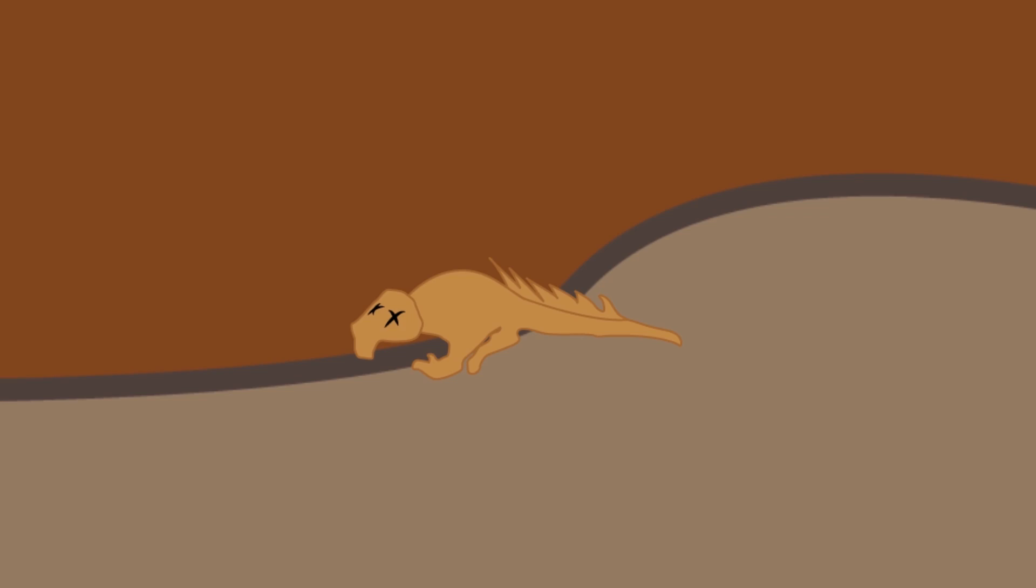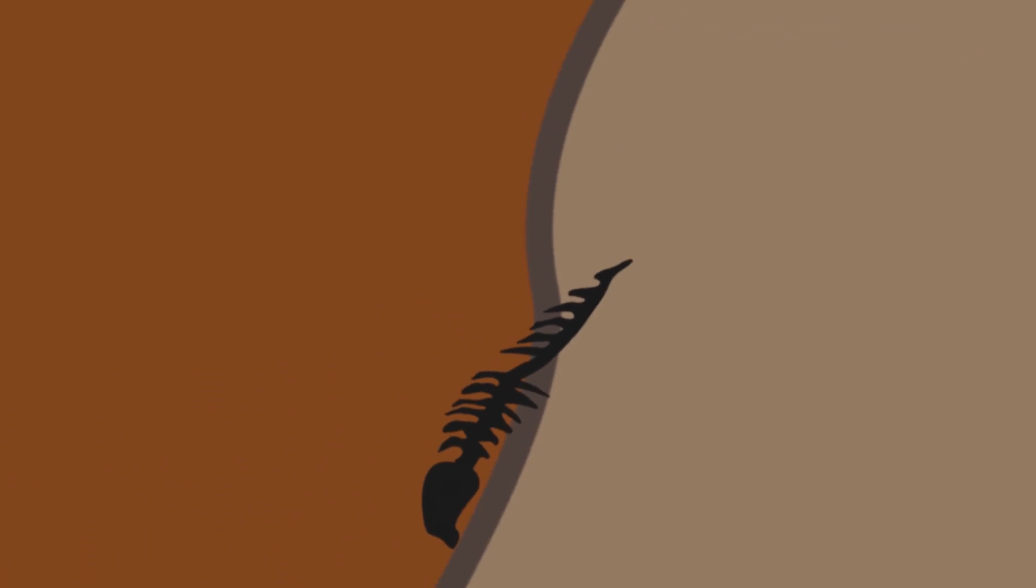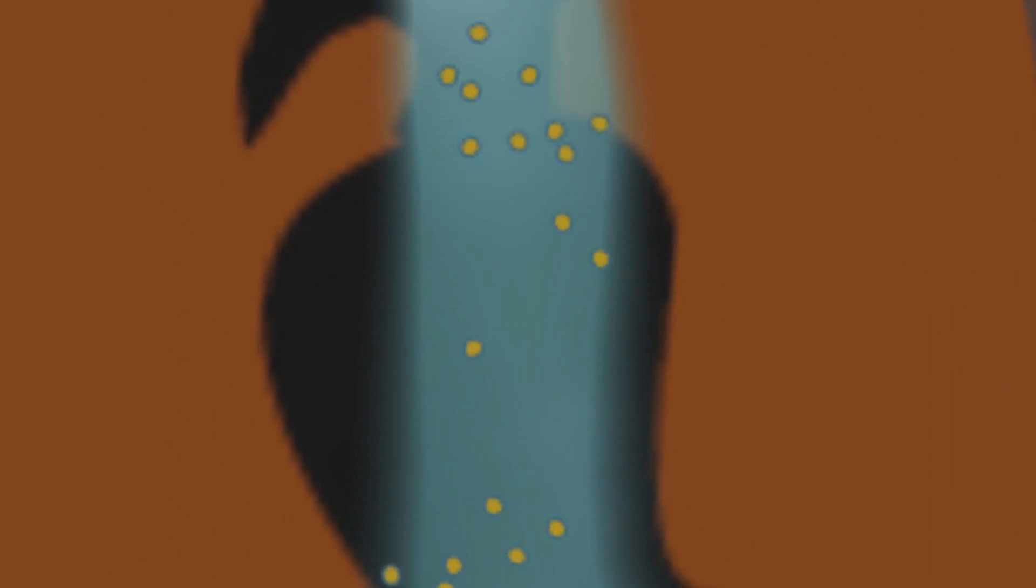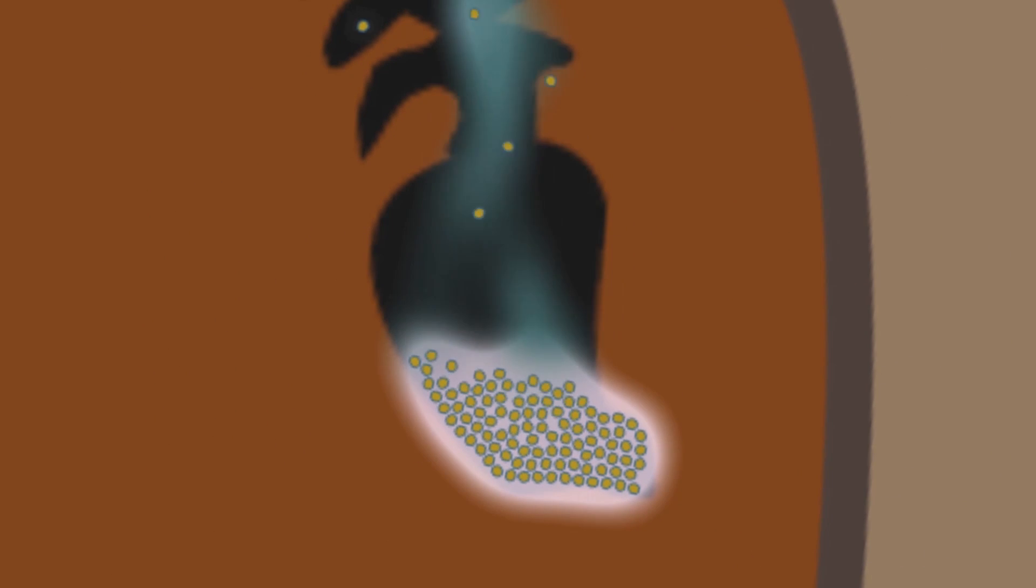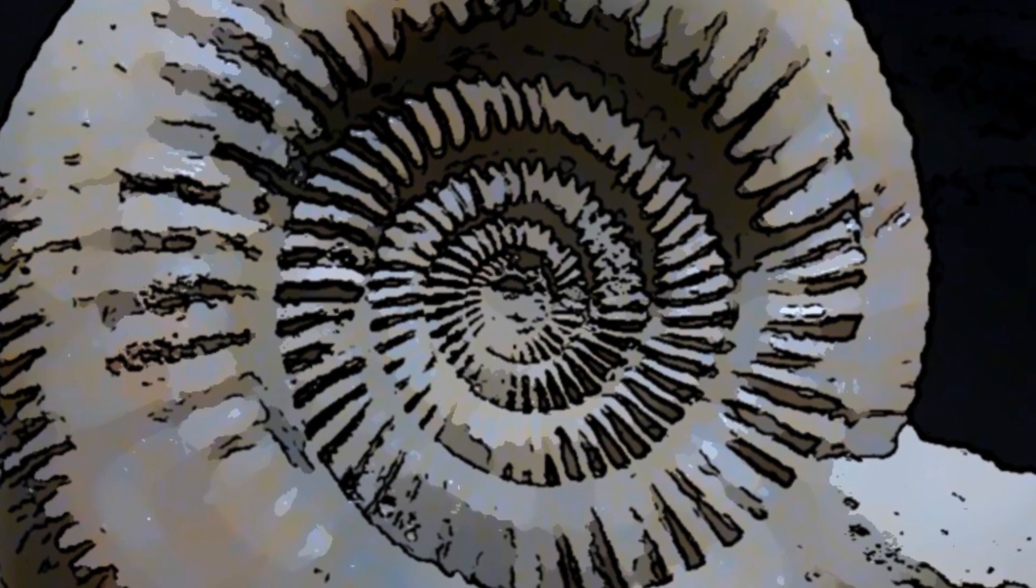In some cases, the remains of the organism are dissolved. The remaining organism-shaped hole in the rock is called an external mold. If this hole is later filled with other minerals, it is a cast.